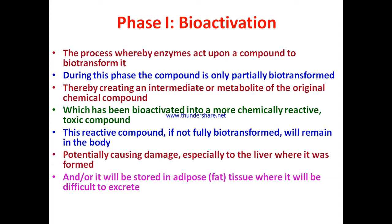Phase one bioactivation is a process where toxins are made biologically active using enzymes. During this phase, the compound is often only partially biotransformed, creating an intermediate or metabolite of the original chemical — one that has been bioactivated into a more chemically reactive and toxic compound. After phase one, most toxins are bioactivated into a more chemically reactive toxic compound.